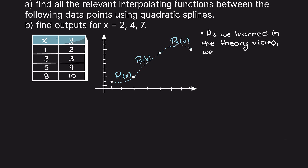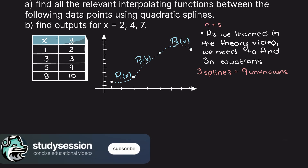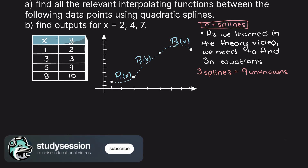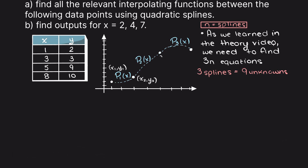As we learned in our quadratic spline theory video, we are going to have 3n unknowns. Therefore we are going to have 9 unknowns and therefore need 9 equations to find all of our necessary unknowns.